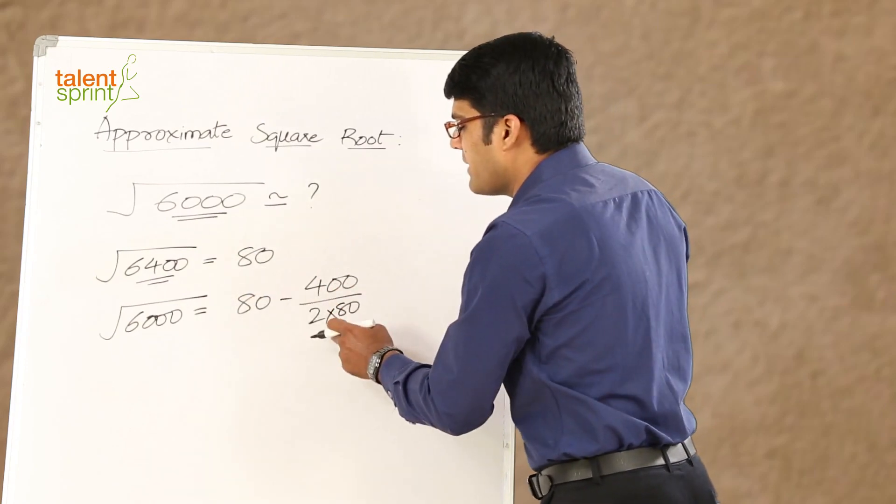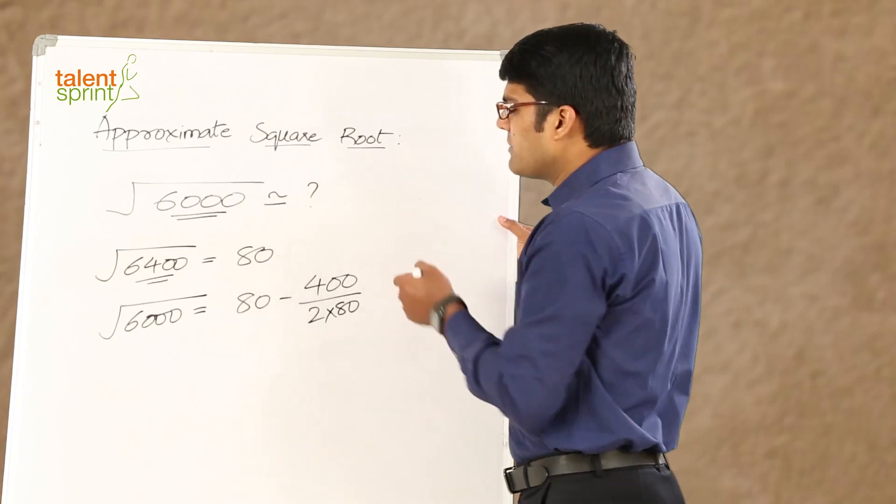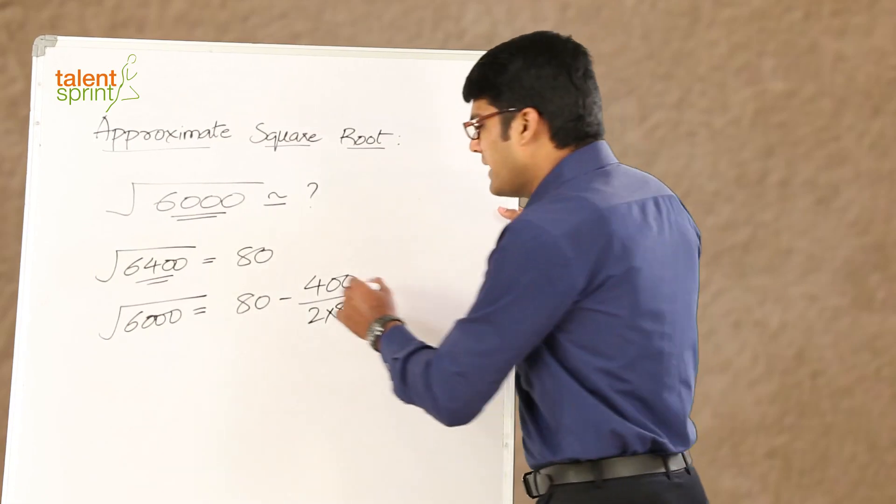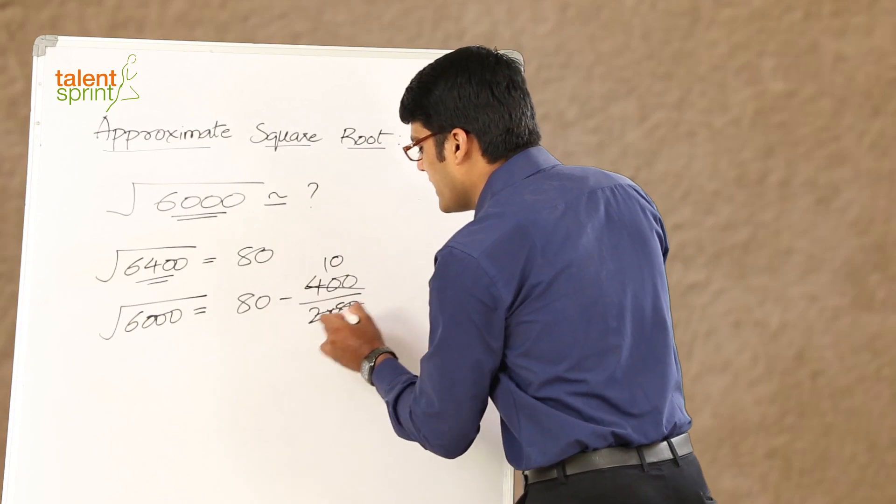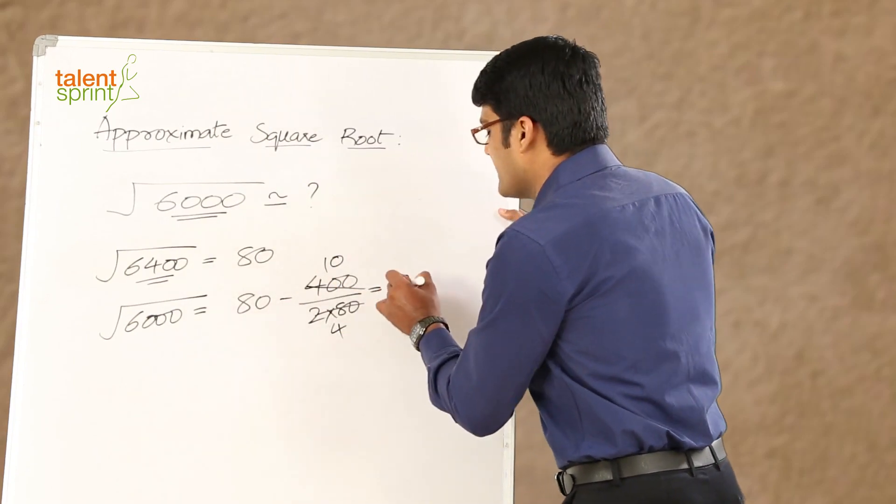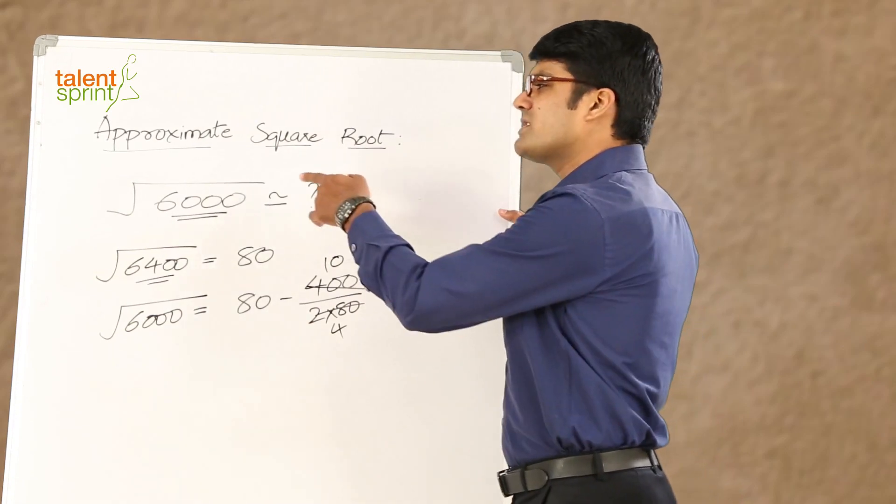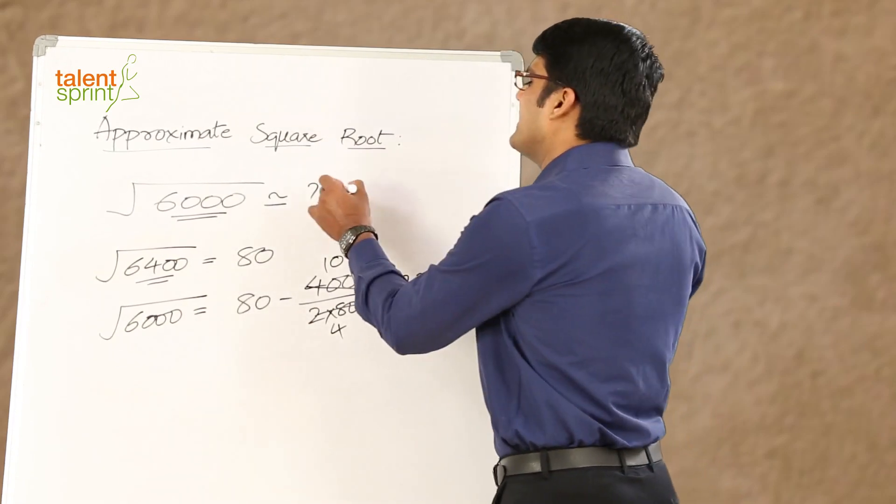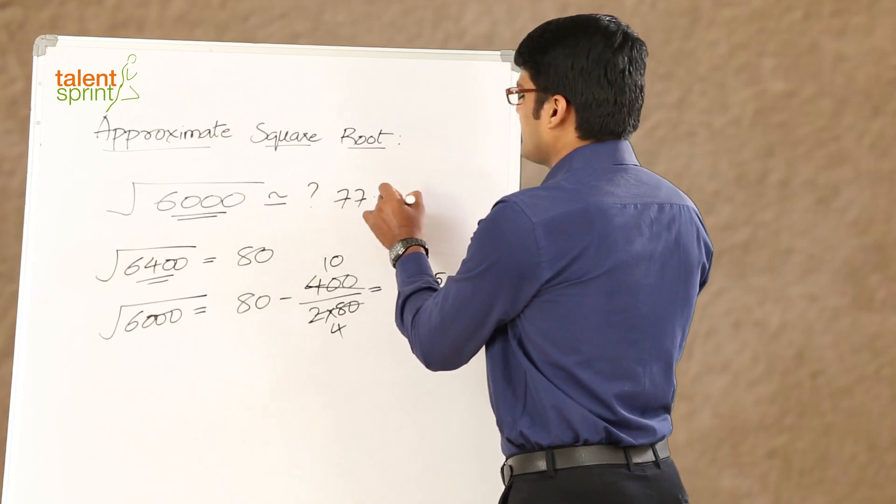So, 80 minus 400 by 2 into 80 is 160. 400 by 160 can be taken as 10 by 4. This is 40 into 10 and 40 into 4. 10 by 4 is 2.5. So, 80 minus 2.5 is 77.5. So, we can say that the approximate square root of 6,000 is 77.5 or 78.